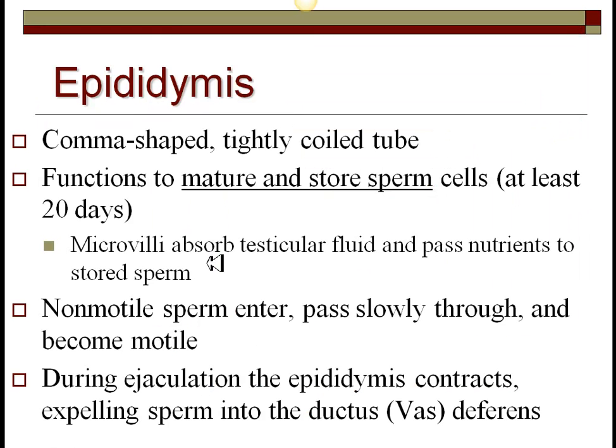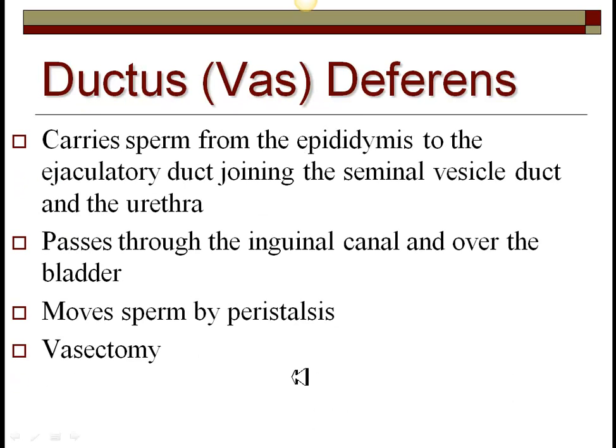The epididymis is that comma-shaped coiled tube attached to the testes. Its function is to mature and store sperm. The microvilli actually absorb testicular fluids and pass these nutrients on to the sperm. At this stage, sperm are not motile — they'll slowly pass through the epididymis and become fully functioning and motile. During ejaculation, the epididymis will contract and expel the sperm into the vas deferens, also called the ductus deferens.